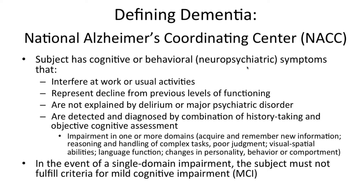The National Alzheimer's Coordinating Center also defines dementia. Their all-cause dementia definition states that the subject has cognitive or behavioral neuropsychiatric symptoms that interfere with the ability to function at work or usual activities, representing a decline from previous levels of functioning, not explained by delirium or a major psychiatric disorder. The cognitive impairment is detected by a combination of history-taking and objective cognitive assessment, with impairment in one or more domains including acquiring and remembering new information, reasoning, handling complex tasks, poor judgment, visuospatial abilities, language function, and changes in personality, behavior, or comportment. In the event of a single domain impairment, such as behavioral variant FTD, the subject must not also fulfill criteria for MCI.